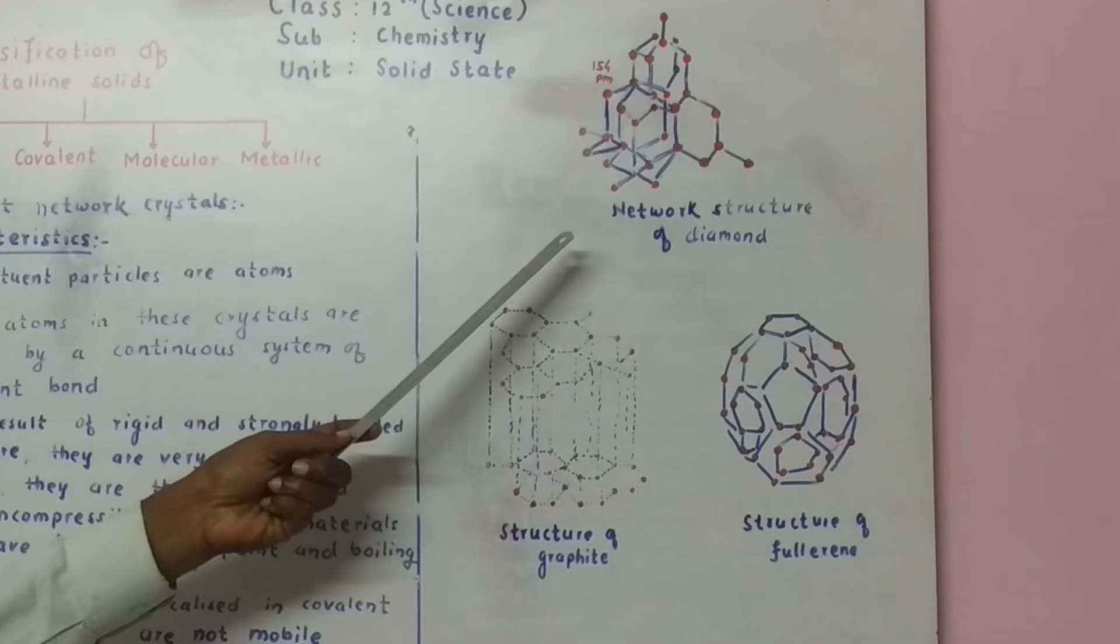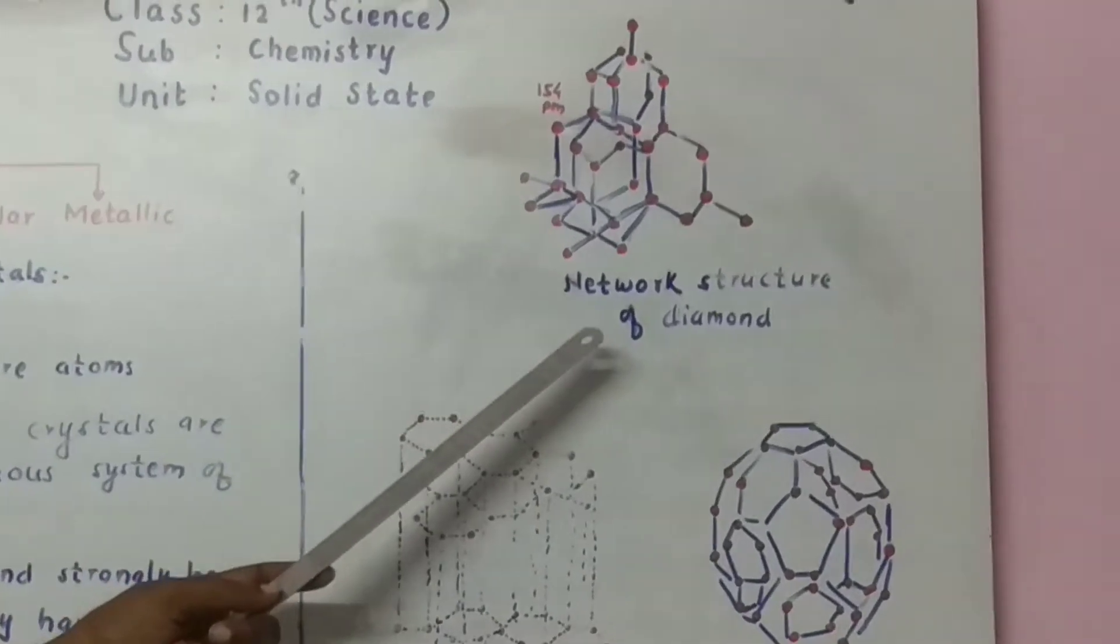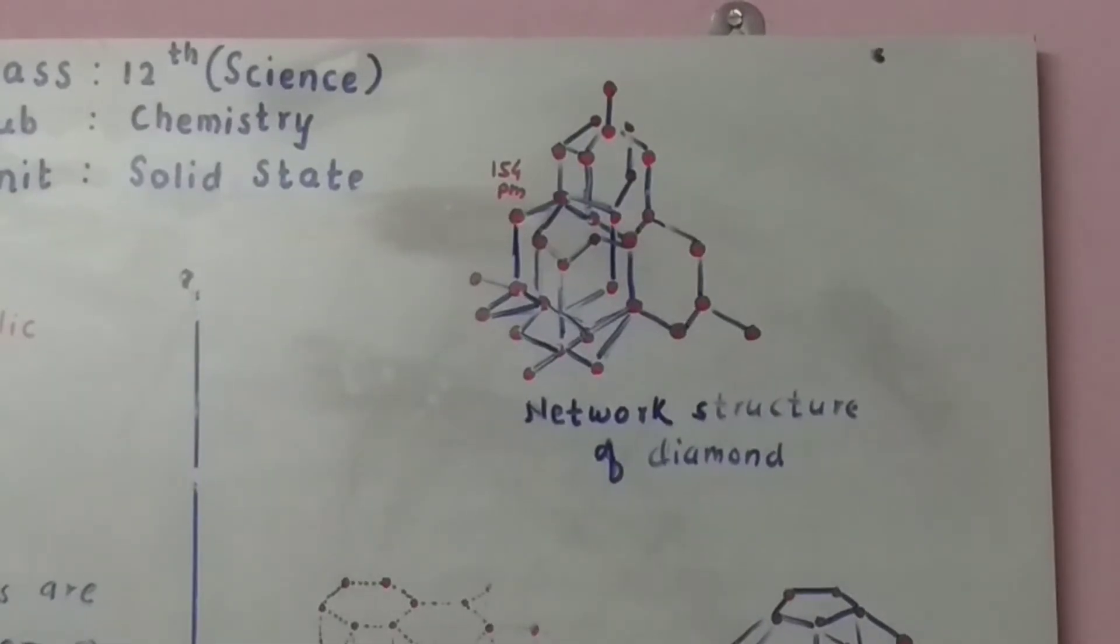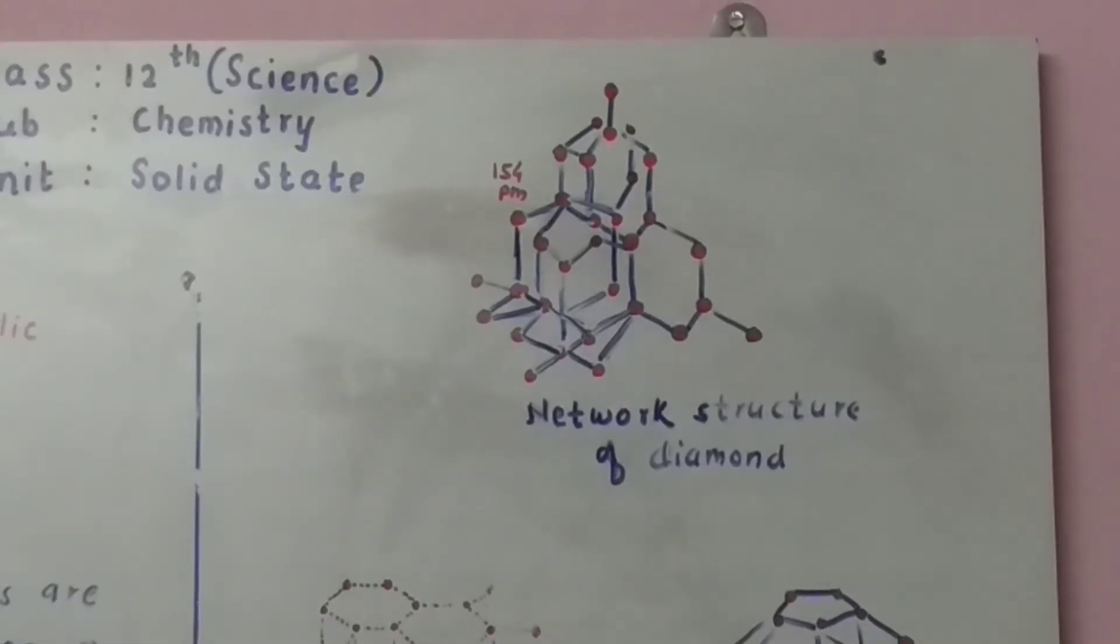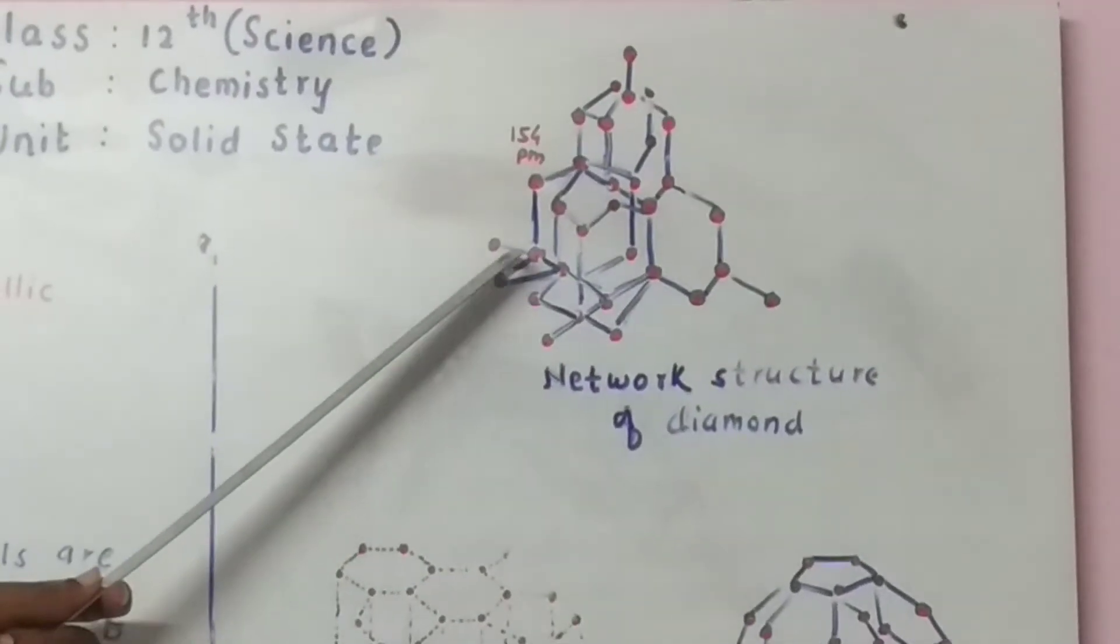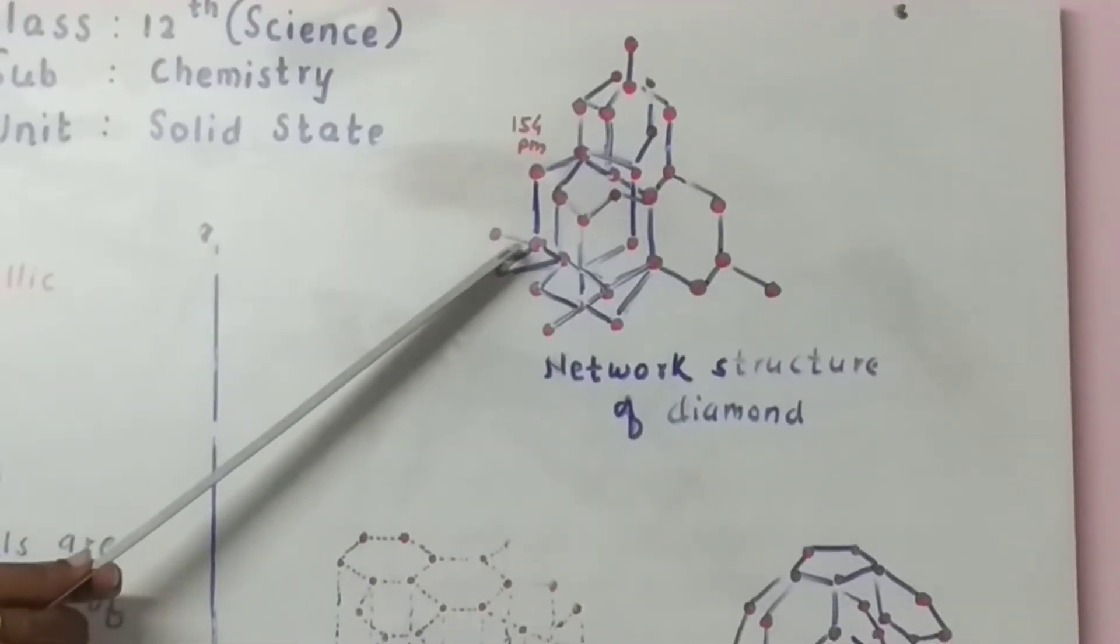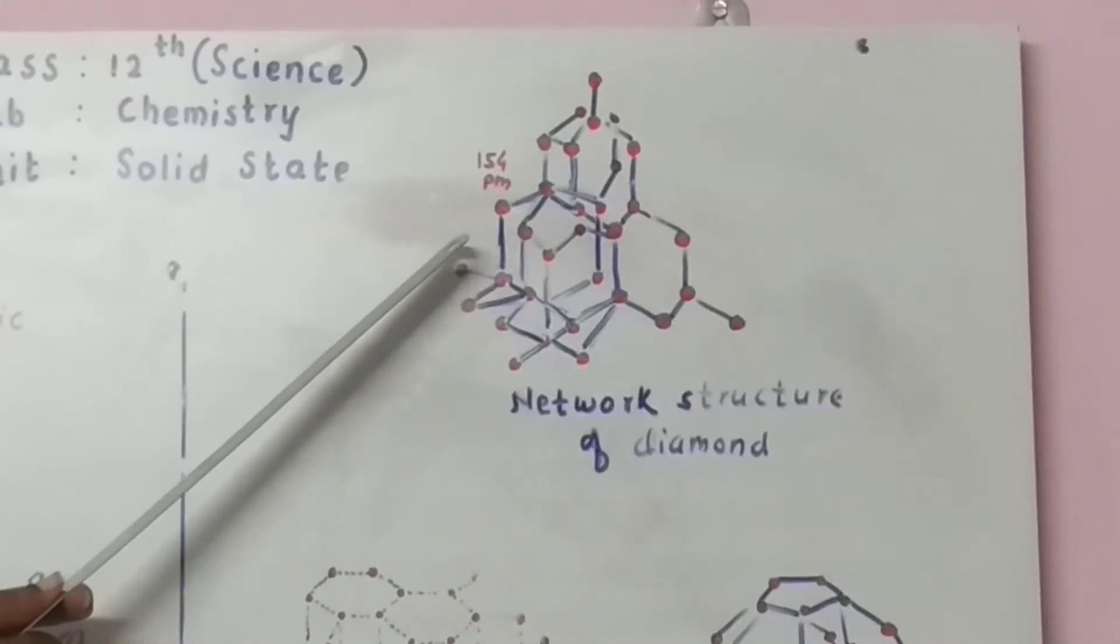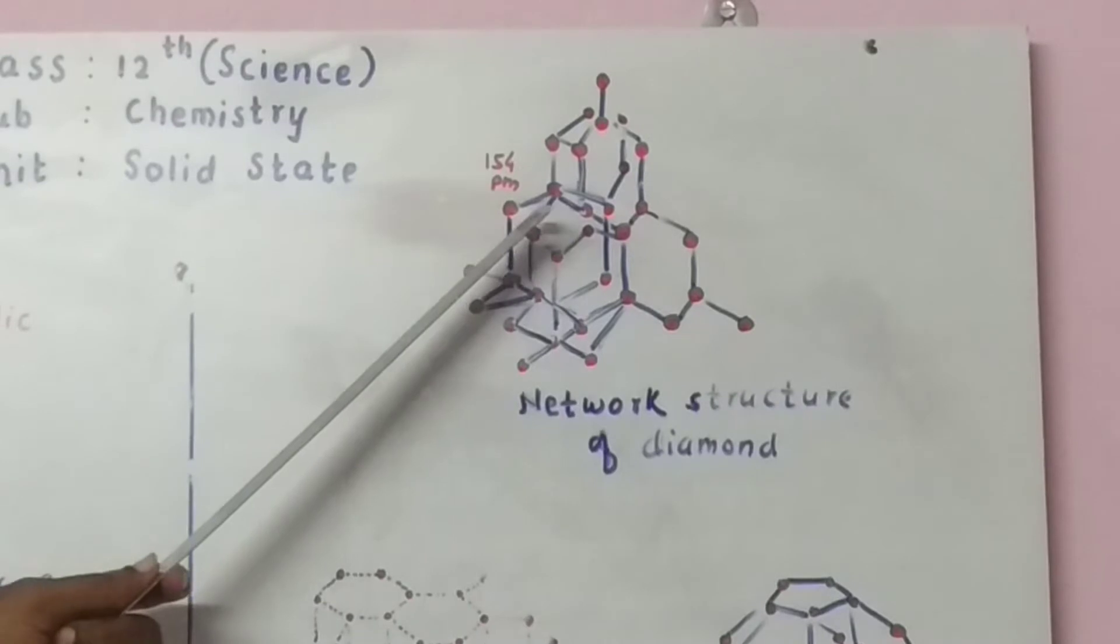First is diamond. Here network structure of diamond is given. In covalent crystalline solids, carbons which are linked to each other by covalent bond. Here carbon atoms are sp3 hybridized.